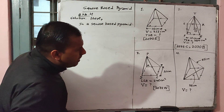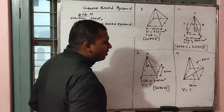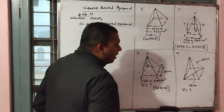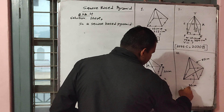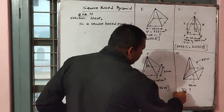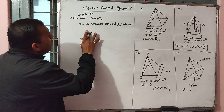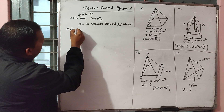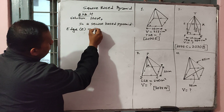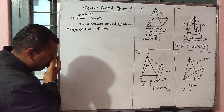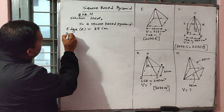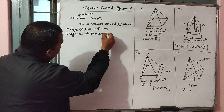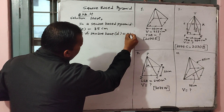Now we start question number 4. In this question we have given that the edge of the square base pyramid E equals 85 cm, and the diagonal of the square base D equals 26 cm. We need to calculate its volume.